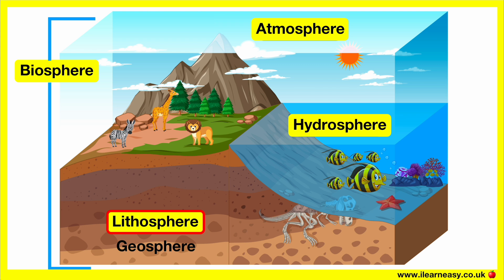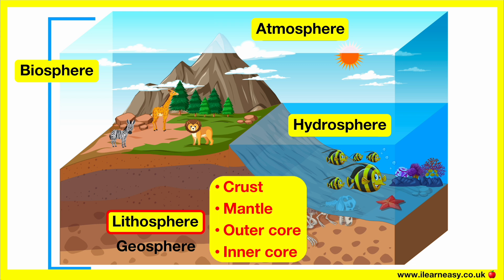Lithosphere. The lithosphere is also sometimes known as the geosphere. The Earth is split into four main layers: the crust, the mantle, the outer core and the inner core. The lithosphere is the rocky outer surface of the Earth's crust and the upper portion of the mantle. The lithosphere is essentially the land on which biological life exists.